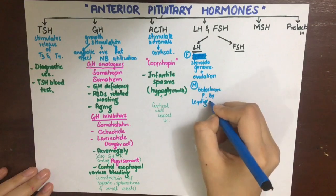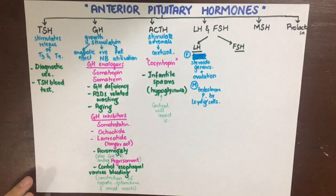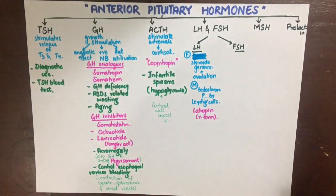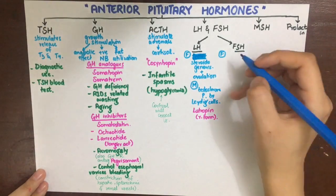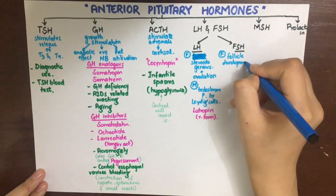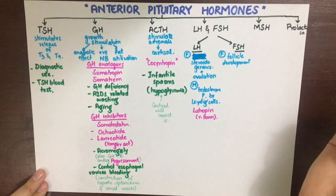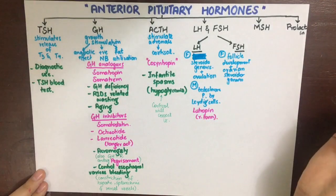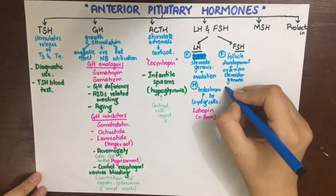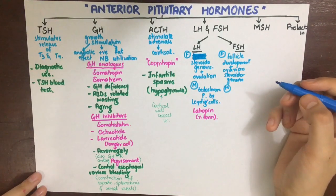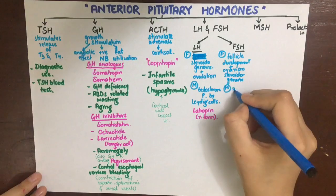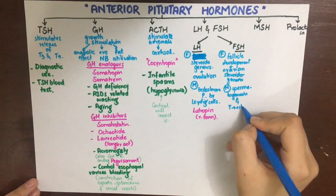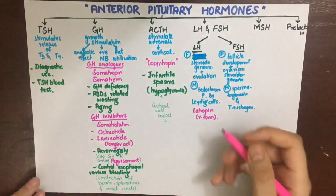The recombinant form of LH, lutropin, can be used to cause these effects whenever needed. Follicle stimulating hormone in females causes ovarian follicle development and ovarian steroidogenesis, while in males it regulates spermatogenesis and converts testosterone to estrogen in the cells. The drugs that can be used in place of FSH are urofollitropin, derived from the urine of postmenopausal women, and follitropin alpha and beta, which are the recombinant forms of FSH.